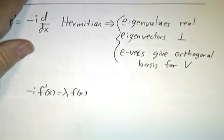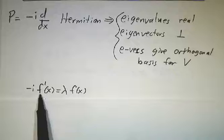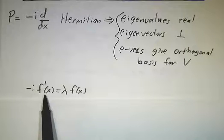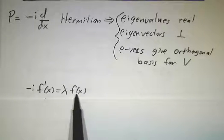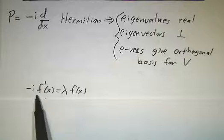So we want to solve minus i times the derivative of f equals lambda times f, where lambda is some real number.